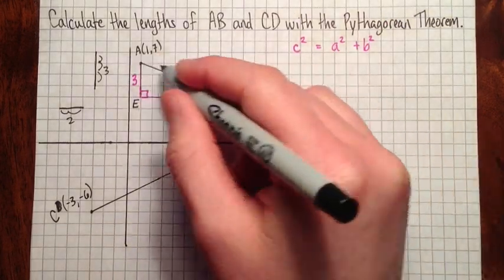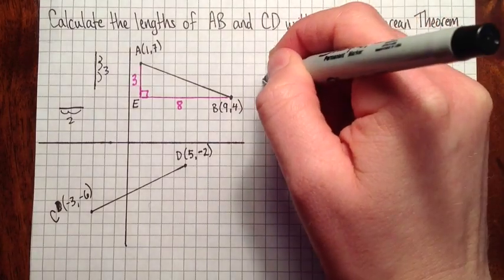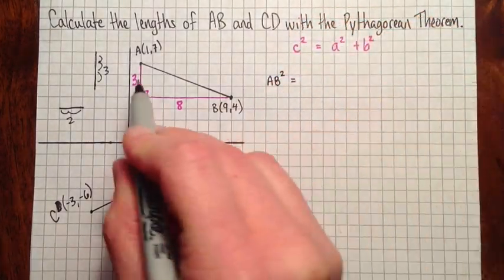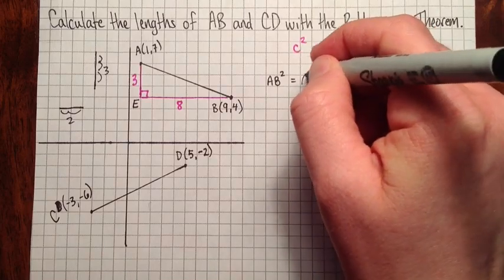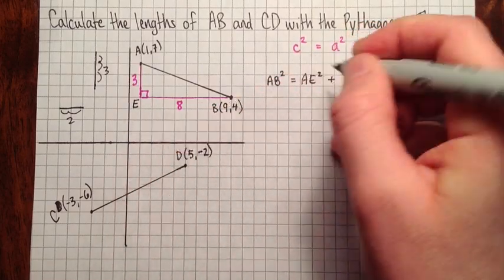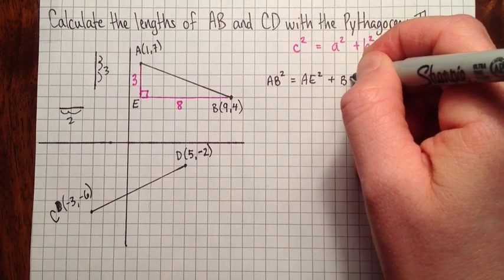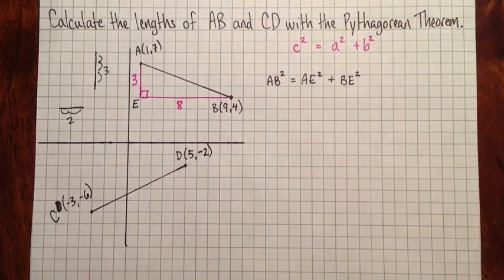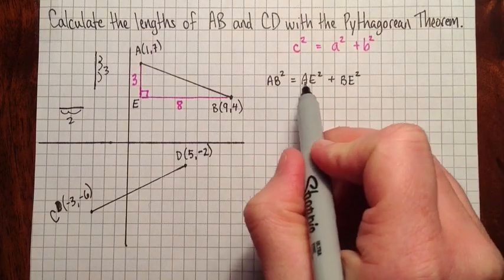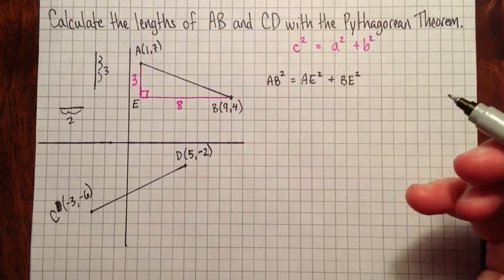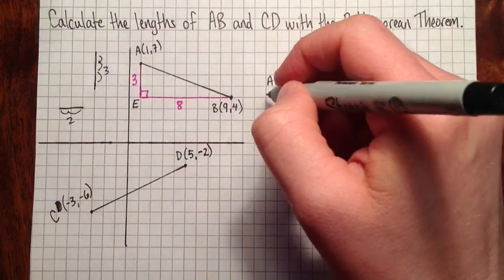Okay, so here we have AB squared, that's the hypotenuse, equals AE squared plus BE squared. You can call it EB squared. I just usually will put them in alphabetical order. I mean, it's really good and important to write this line just so that someone can follow your work, see where these next numbers come from.